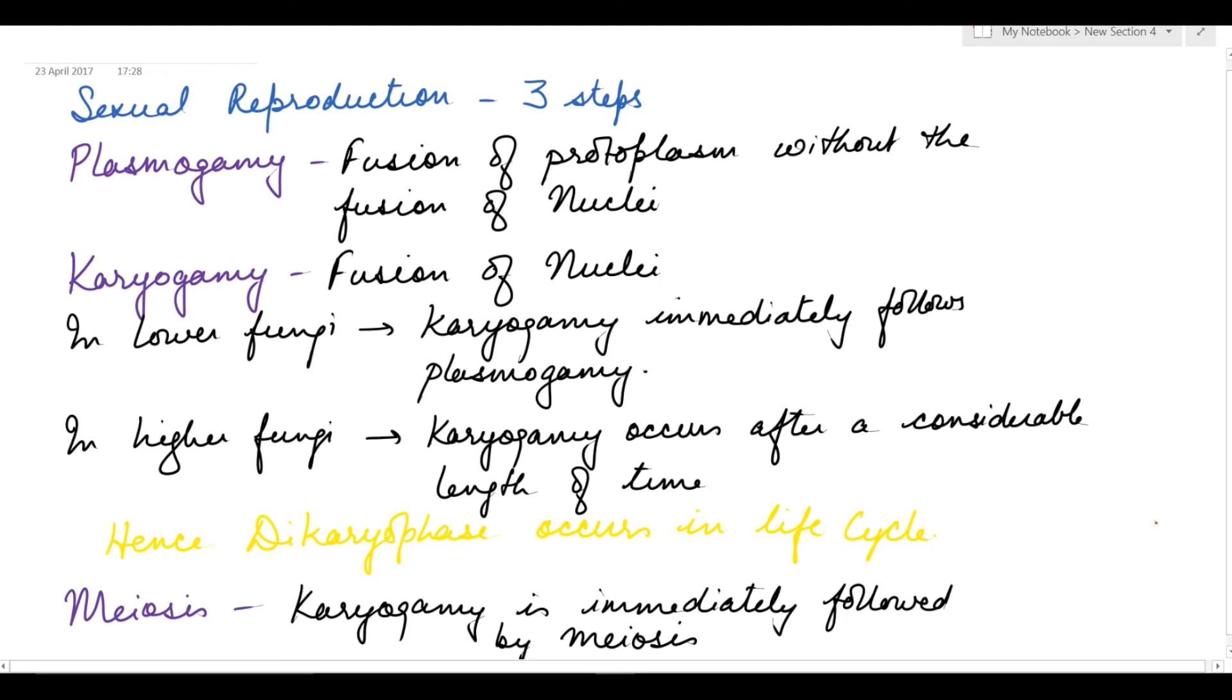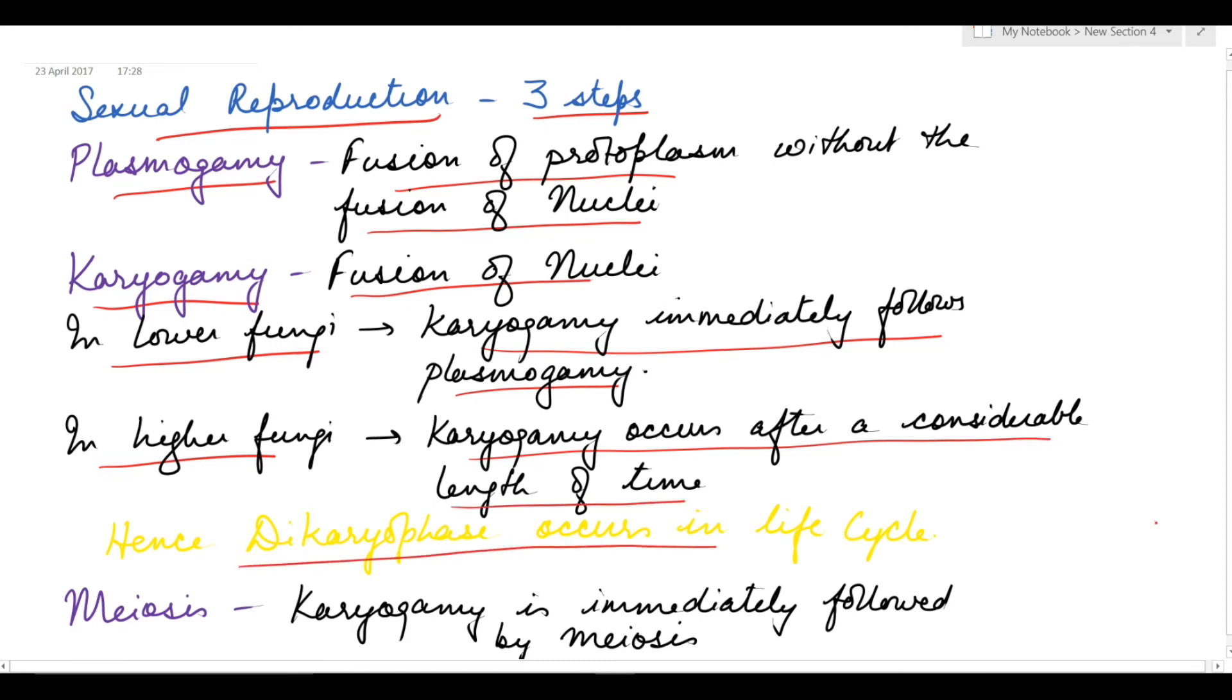Sexual reproduction in fungi can be divided into three steps: plasmogamy, which is fusion of protoplasm without the fusion of nuclei; karyogamy, where fusion of nuclei occurs; and meiosis. In lower fungi, karyogamy immediately follows plasmogamy. In higher fungi, karyogamy occurs after a considerable length of time, due to which a dikaryotic phase is seen in the life cycle, where cells are in the binucleated condition known as a dikaryon. Karyogamy is always followed by meiosis.